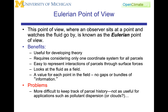This leads to the Eulerian point of view, where the observer sits at a point and watches the fluid go by. The benefits: it's useful for developing theory. Thinking of both the Eulerian and Lagrangian points of view together is often a way to provide more insight or to check that you are representing the physics consistently. It requires consideration of only one coordinate system for all of the parcels. It's easy to represent interactions of parcels through surface forces, though there are still massive challenges of whether the physics are in fact represented correctly, especially the physics of mixing at the smallest scales.